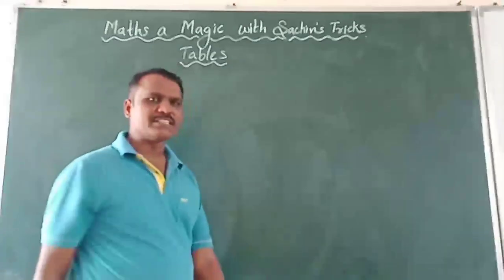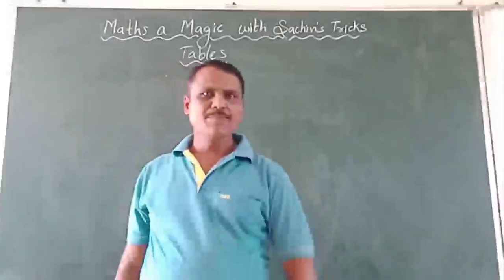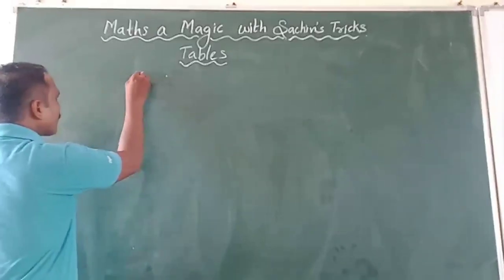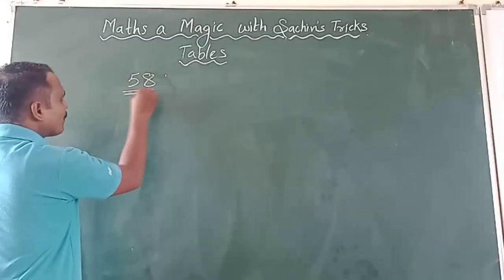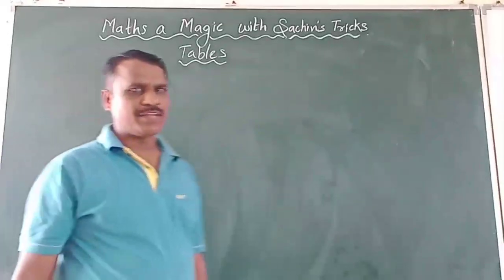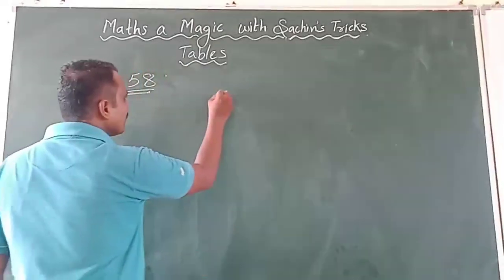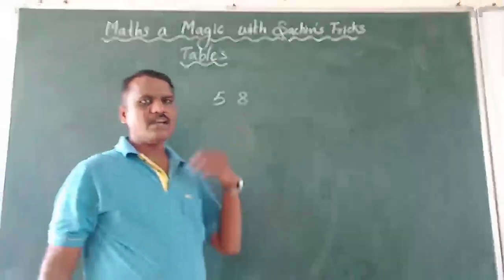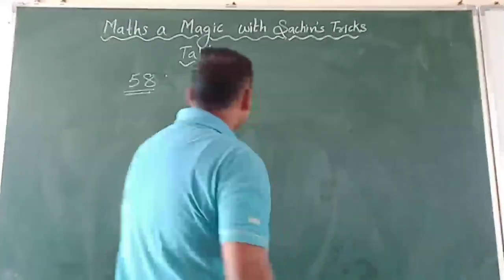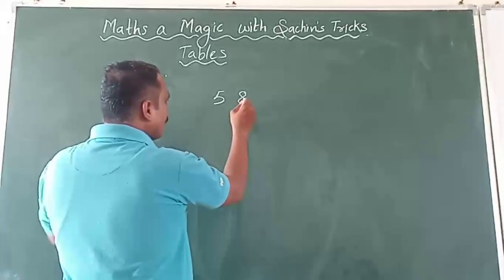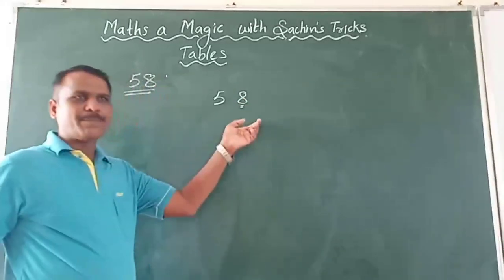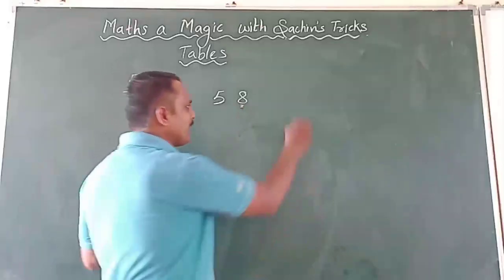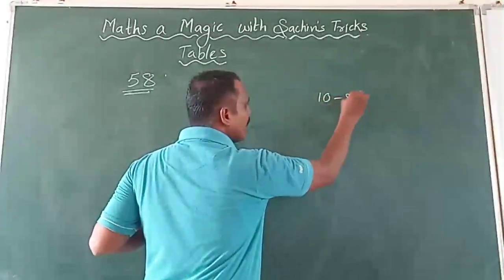Let's take a big example — suppose we take 58. I want to write the table of 58. So I write 5 and 8. Now the digit at the unit place is 8. Subtract it from 10: 10 minus 8 gives 2.